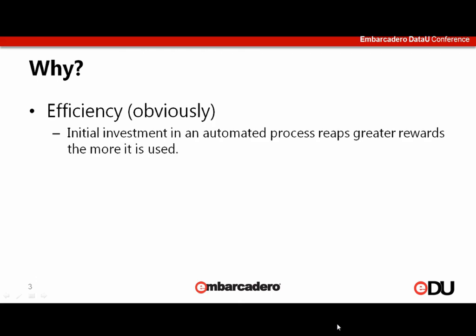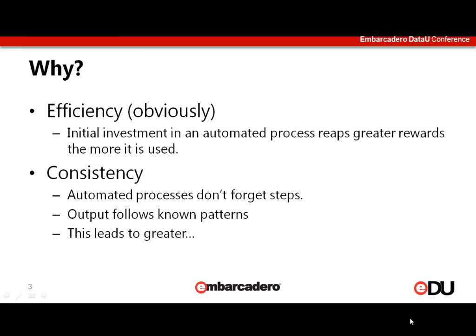Now that we've identified a few tasks that could be automated, we really want to know why we should go through the effort of setting up automation when we can just do tasks manually. Well, the first answer is pretty obvious — you want efficiency. An initial investment in an automated process can really pay off if you use the automated task over and over again. Every time you need to accomplish that goal, you go and reuse your automated process and you save time. The more you do it, the more time and effort you save. But even more than efficiency gains, there's another benefit, and that's consistency. Automated processes don't forget things. Once you've written it, you can expect consistent results every time.